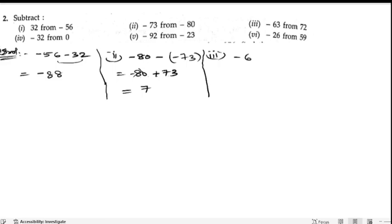Next, third bit: -63 from 72. That means 72 comes first, then minus for subtraction, and the number is -63. So here 72 minus into minus is plus 63. So 3 plus 2 is 5, and 7 plus 6 is 13, so 135.